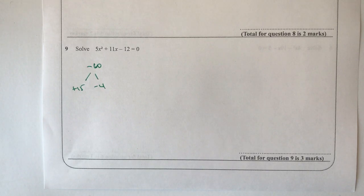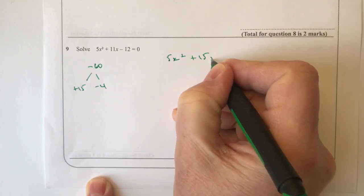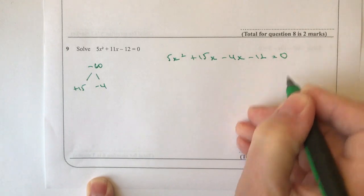What I'm going to do now is I'm going to rewrite the equation, but rather than writing plus eleven x in the middle, I'm going to use these two factors. So I'm going to write that as 5x squared plus 15x minus 4x minus 12 equals zero.